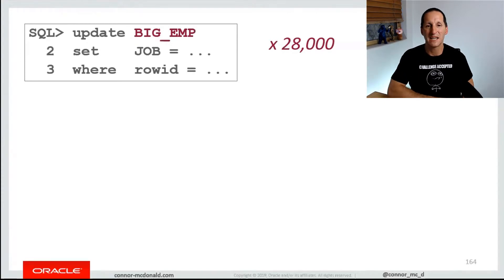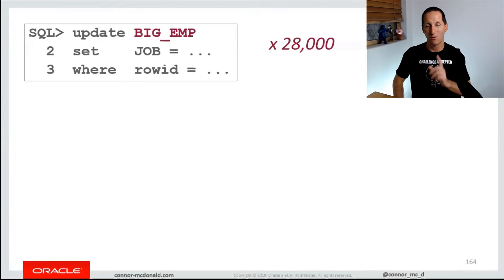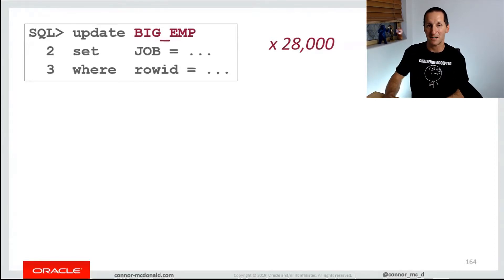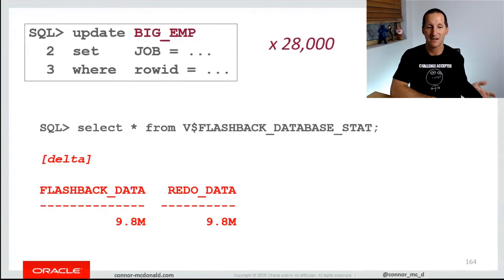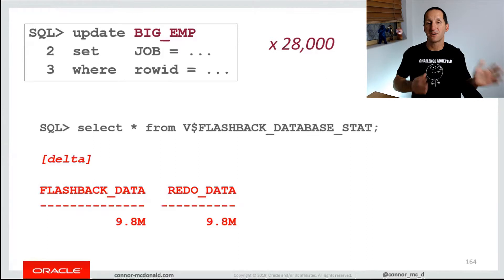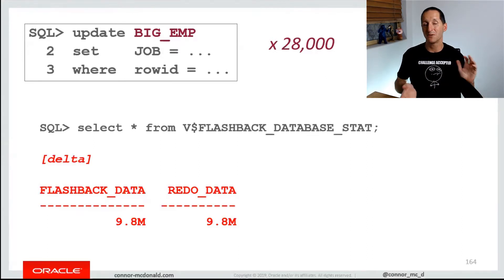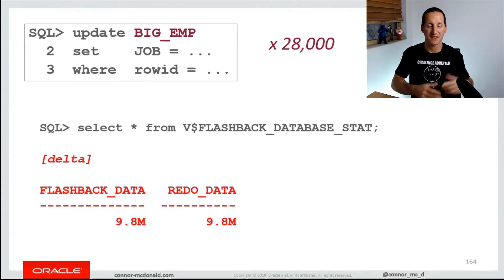What if I change a table called BigEmp, which has millions and millions of rows? I'm still only changing one row at a time, 28,000 times, so the volume of data being changed is the same — 28,000 single row updates. But because those rows are scattered across different blocks, the amount of flashback logs is about comparable to the actual redo logs. Typically, you'll sit somewhere between 30% to 100% of your redo size for your flashback log size. That's a nice easy way of roughly estimating where you're going to be.